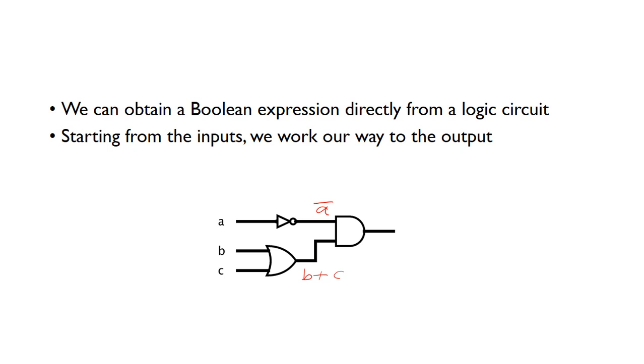And then these two expressions here are combined using an AND function. We use the dot operator for AND, so we've got NOT A AND B OR C.